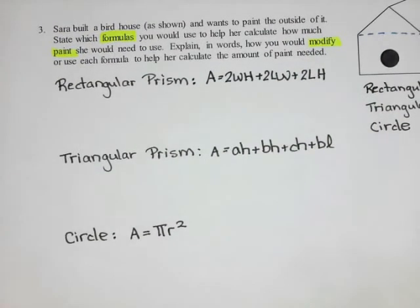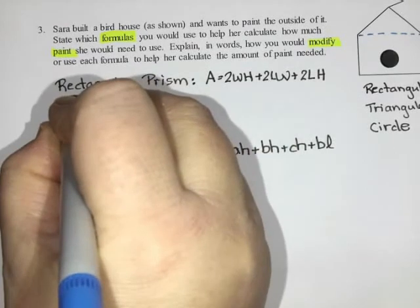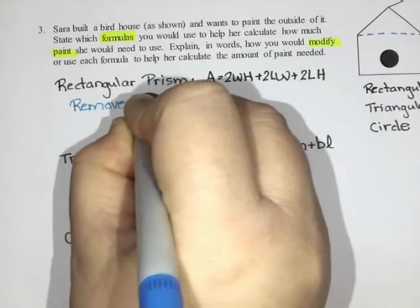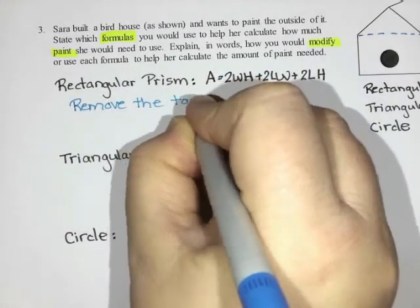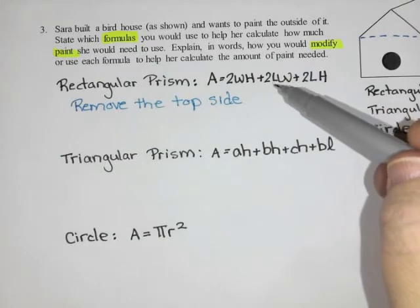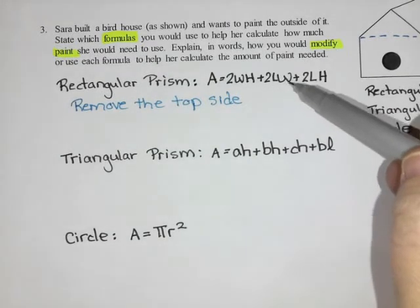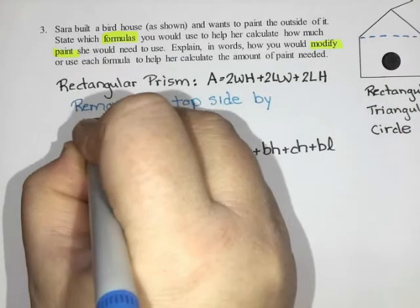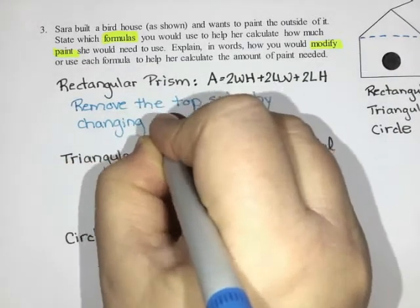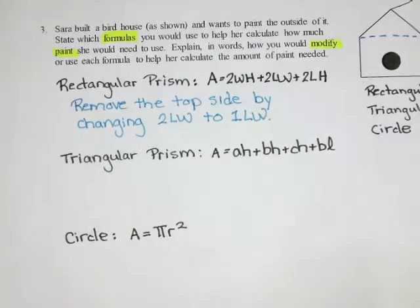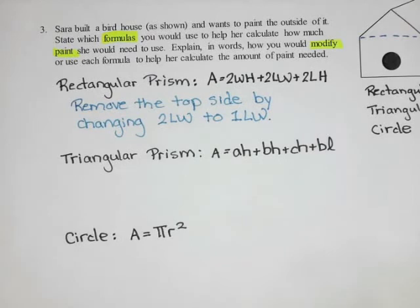I would modify the rectangular prism formula by removing the top side — by changing two length-width to one length-width. So you subtract one length-width from the formula. You need to remove that top side because it's inside the shape.